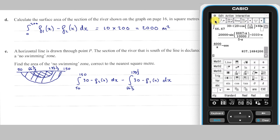The difference of these two definite integrals is 837 square metres to the nearest square metre.